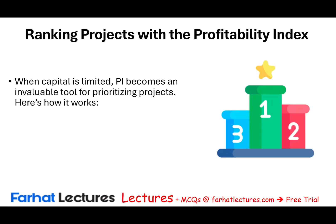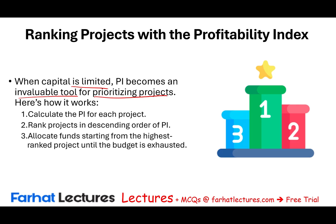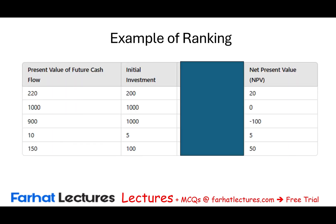What we do is rank projects using PI. When capital is limited, PI becomes an invaluable tool for prioritizing projects. Here's how it works: calculate the PI for each project, rank them in descending order, and allocate funds starting with the highest-ranked project until the budget is exhausted. Let's take a look at five different competing projects.